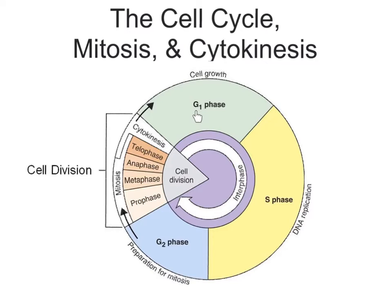G1 — G for growth — so this is when the cell is growing. It's metabolically active, going through all of its normal functions to sustain its life, or the life of the organism: cellular respiration, photosynthesis, transport — passive and active transport.